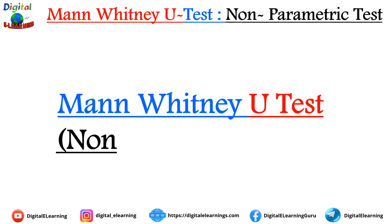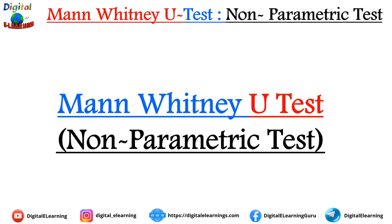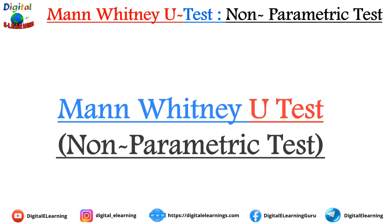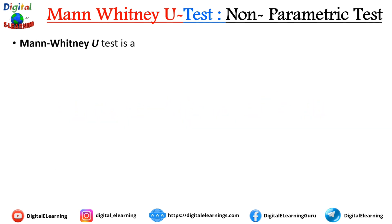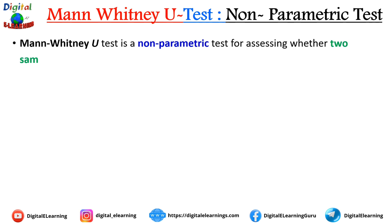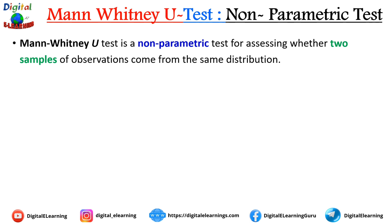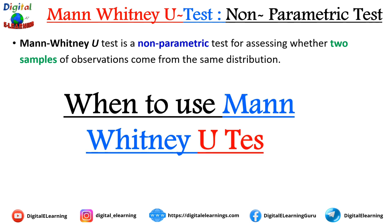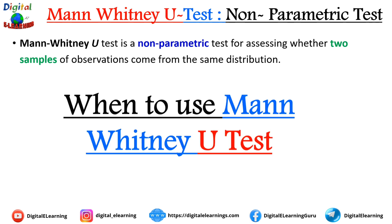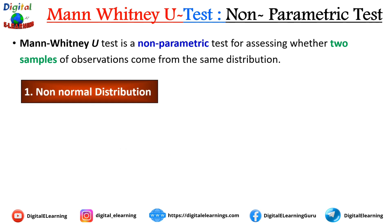One of the most widely used non-parametric tests is the Mann-Whitney U test. It is used for assessing whether two samples of observations come from the same distribution or not. This test is ideal when the data does not follow a normal distribution, as it compares the ranks of data rather than the raw data itself.